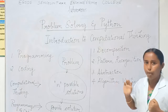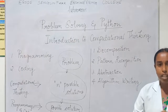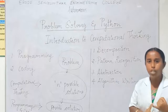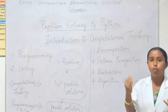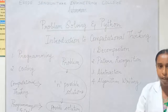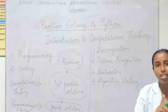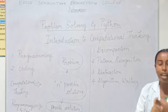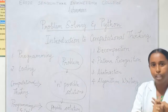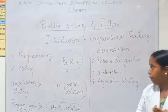Let us consider the problem: how will I reach Mars? In the first stage, decomposition — if I need to reach Mars, what are all the necessary things I need? I need to plan when to go, what things to take, what dress code to follow, what rules to follow on Mars, and how long I need to stay there. That is the decomposition stage.